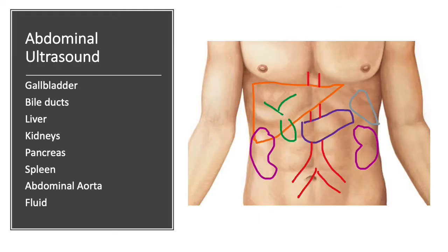The areas assessed with abdominal ultrasound are as follows, which we will discuss in detail: the gallbladder, bile ducts, liver, kidneys, pancreas, spleen, abdominal aorta, and fluid and ascites.